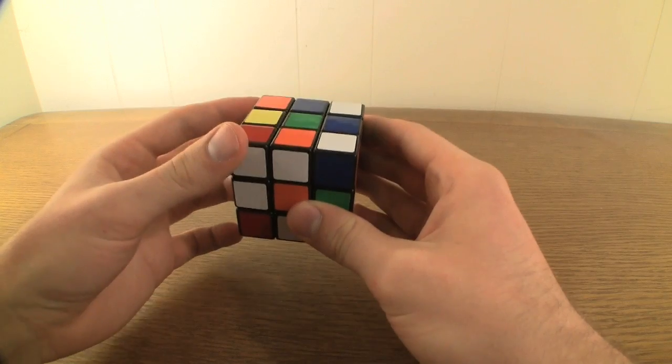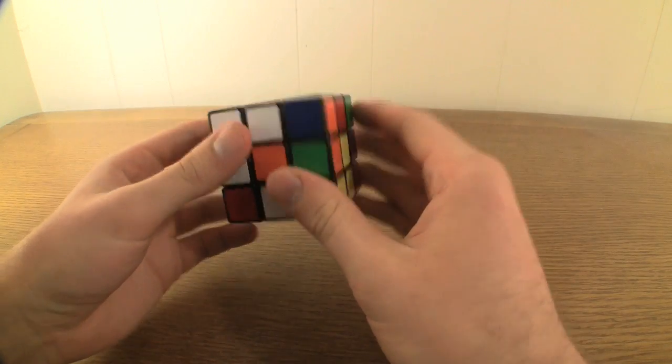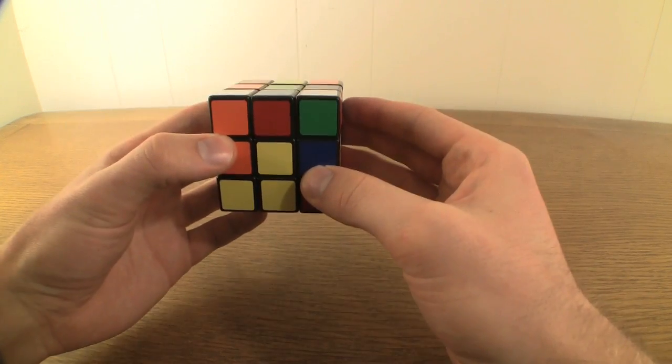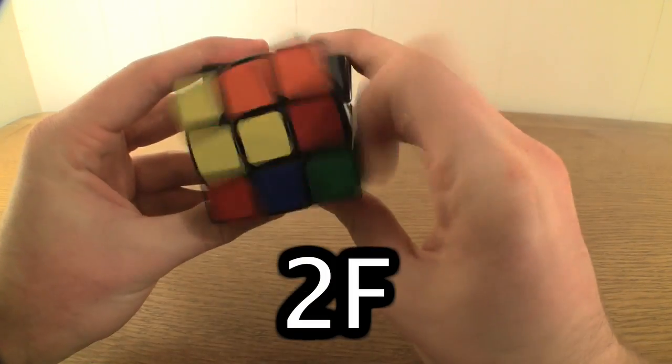With the green center still on top, reorient the cube so that your edge piece is part of the front face, and rotate the front face 180 degrees, or 2F.